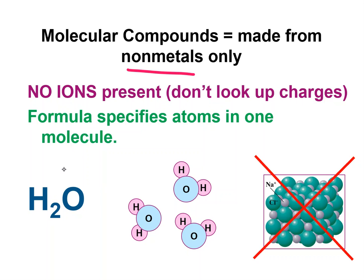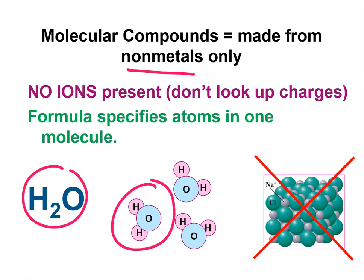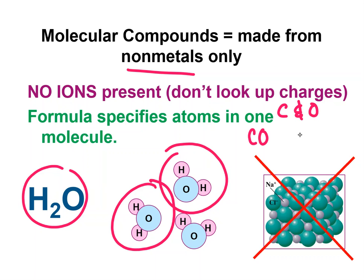In these, the formula tells you what is in one group. So the name has to tell you what is in one group — you can't figure it out any other way. In fact, if I just told you the elements, you couldn't figure out the formula, because a lot of times there's more than one compound that is possible, like carbon monoxide and carbon dioxide. So the name has to specify what's in one group.